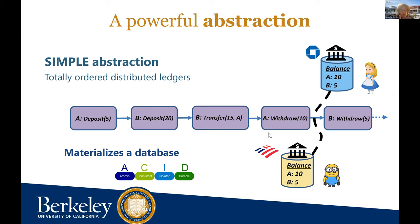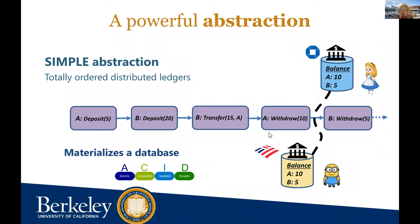At the heart of these protocols is a beautiful and simple abstraction: that of a totally ordered ledger. This allows mutually distrustful parties to share and replicate data in a way that is resilient to some amount of malicious or Byzantine behaviors, and still agree on a common view of the system state. If you totally order transactions and execute them one at a time, that trivially maintains ACID guarantees such as atomicity and isolation. This makes it easy for applications to materialize a key-value store on top of this sequential ledger.